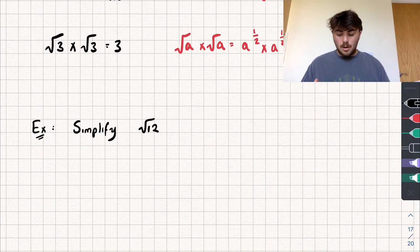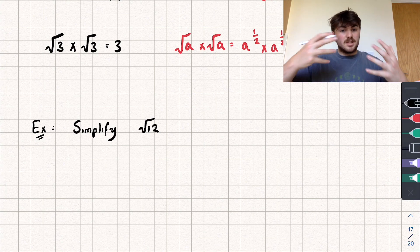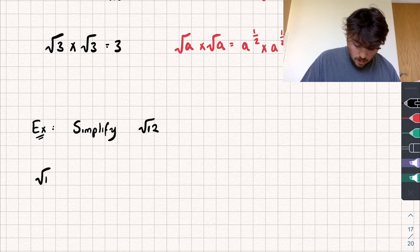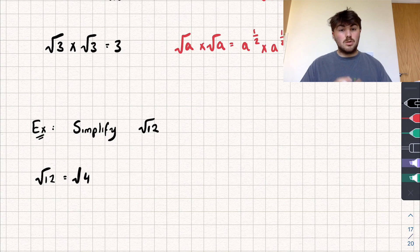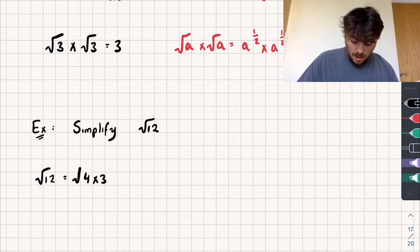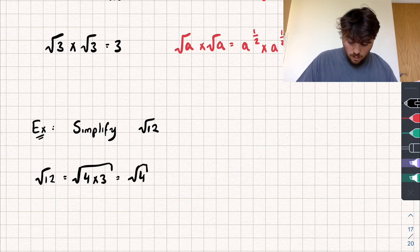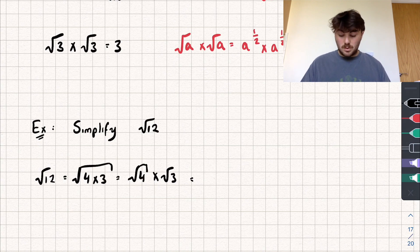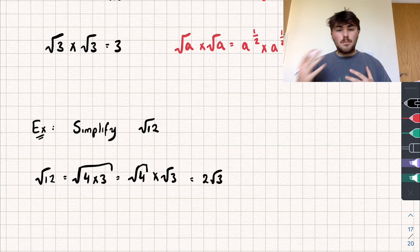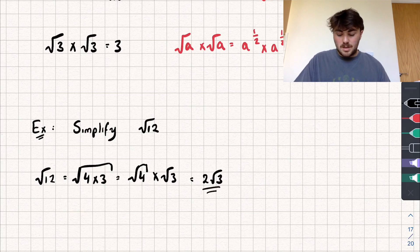Can you think of a square number that multiplies by something else to get 12? We could say the square root of 12 equals the square root of 4 — our square number, since 2×2=4 — multiplied by 3. Using our first rule, this is the square root of 4 multiplied by the square root of 3, which we write as 2√3. Can we simplify this any more? Are there square numbers we can use to make 3? No, so 2√3 is the simplest form.